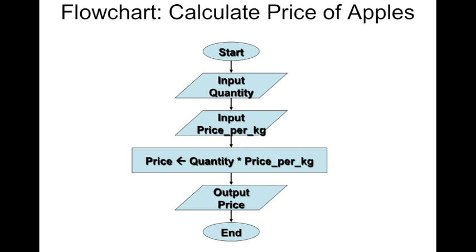This is how we represent that problem in a flowchart. There is a definite start, and an input which is the quantity, and another input which is the price per kilogram. Notice that it is drawn within this parallelogram for both inputs. While the process is whereby we multiply quantity and price per kilogram to get our price, is drawn in a rectangle shape box to show that this is a process or a mathematical process.